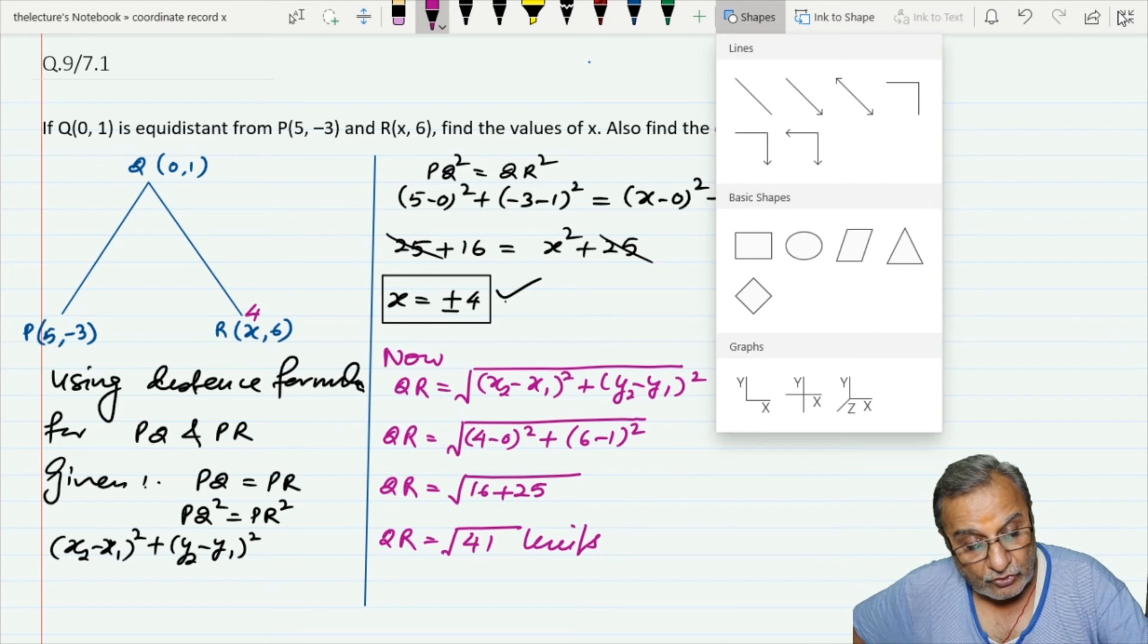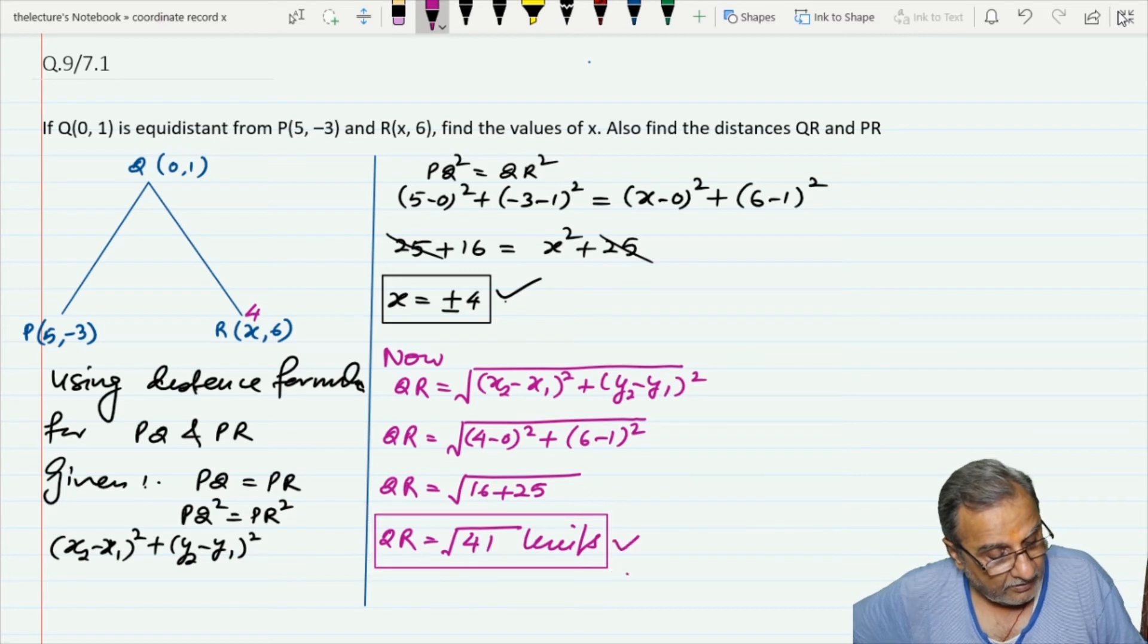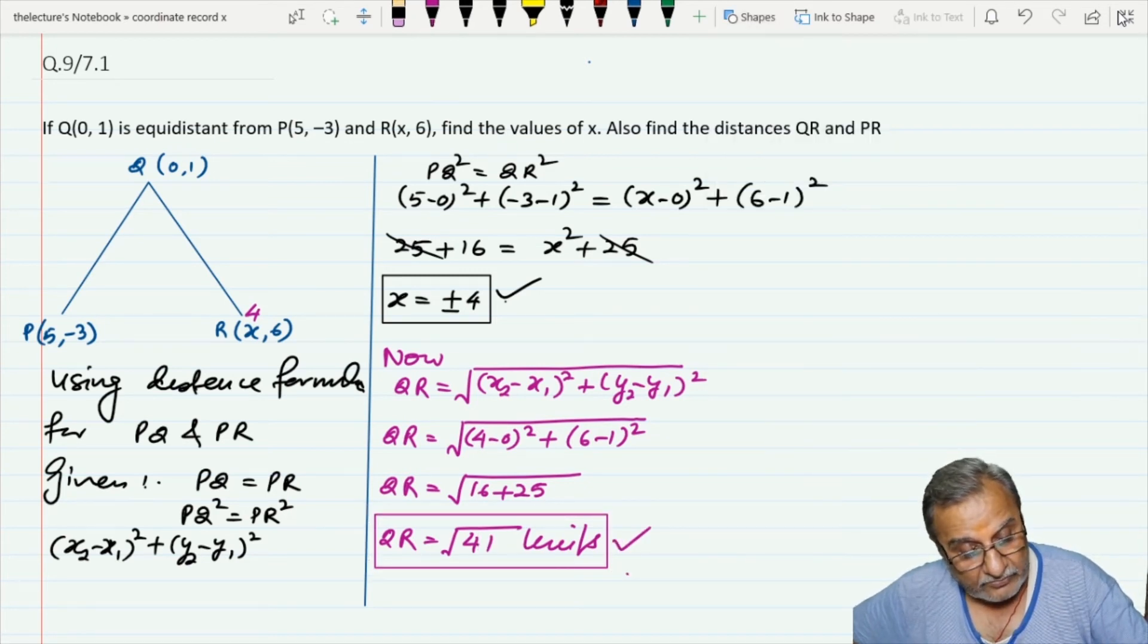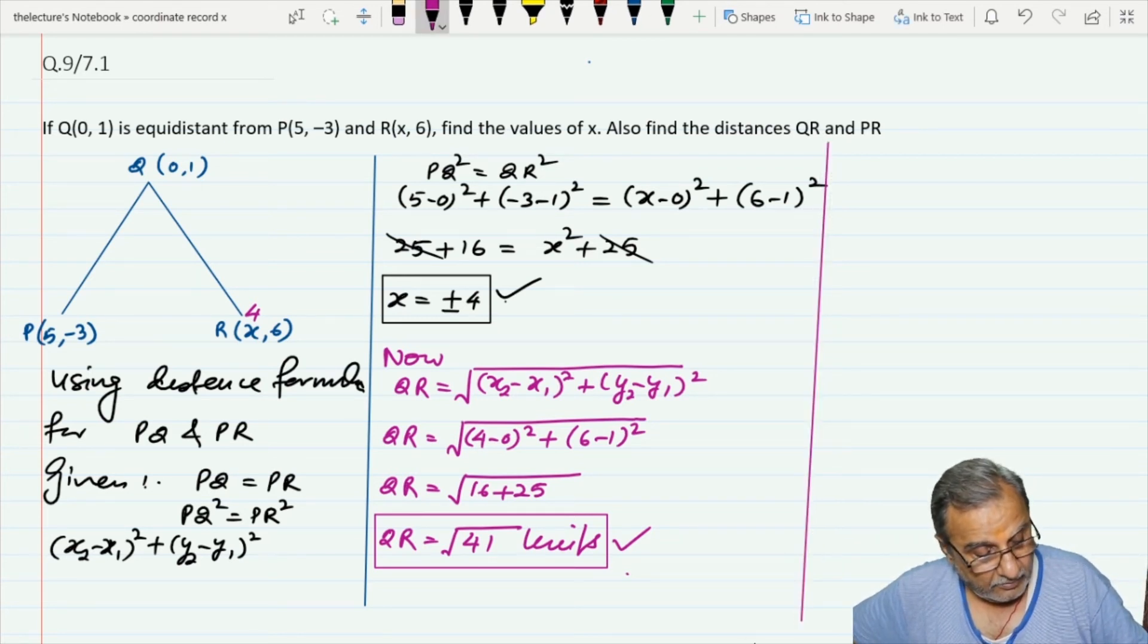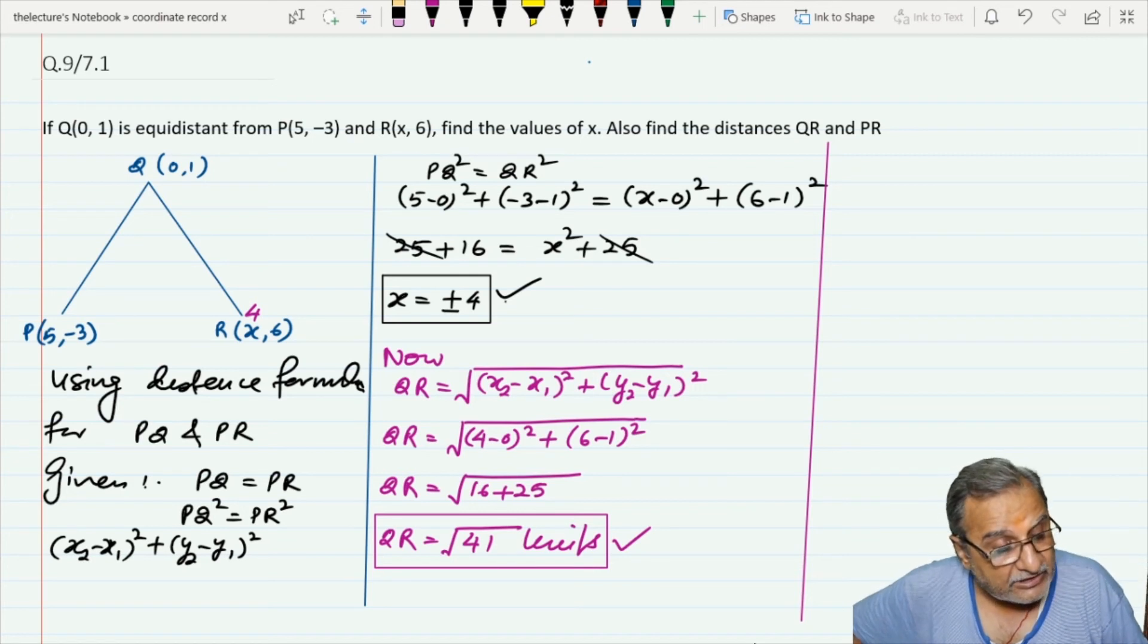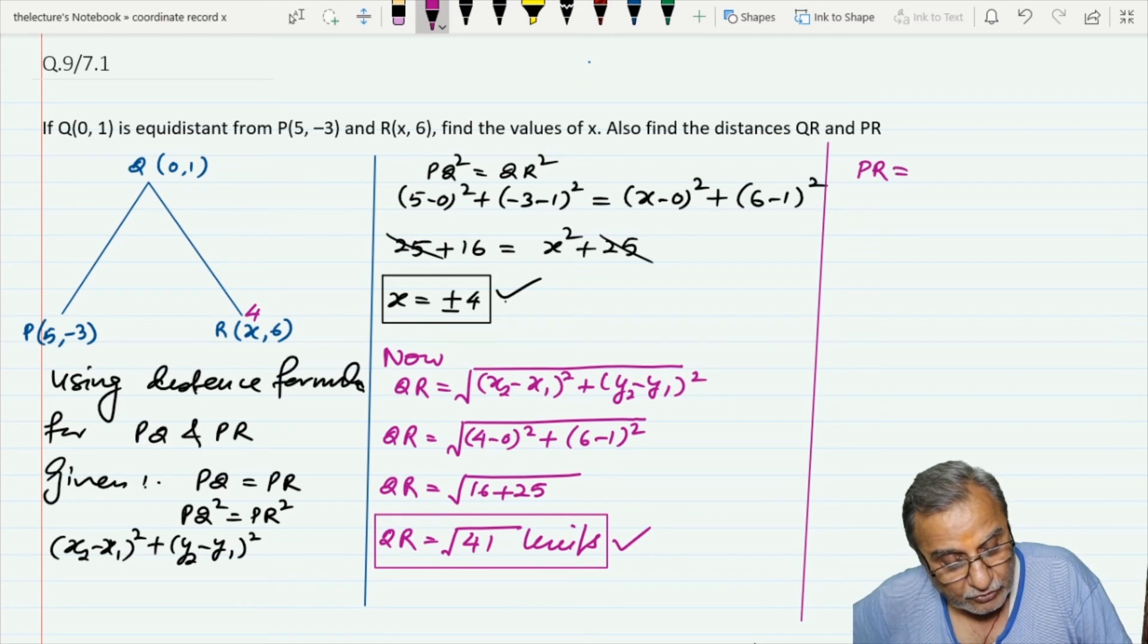So the distance between Q and R is √41 units. Now the last one is the distance between P and R. PR equals...